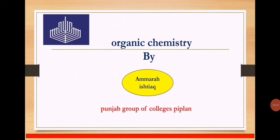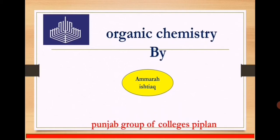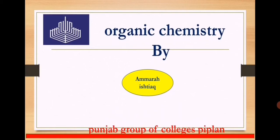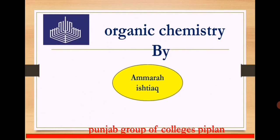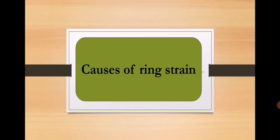Assalamu alaikum, Amirash Tehak here. Today we are going to study Organic Chemistry for ADS Part 2. Students, as you know, we were discussing cycloalkanes. So now, in today's lecture, we will discuss the last topic of cycloalkanes, which is the causes of ring strain.